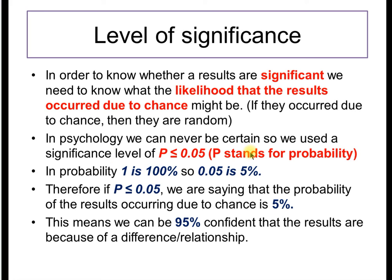P stands for probability. In probability theory, we express something like 5% as 0.05, with 1 being 100%. Therefore, if our probability is 0.05, we're saying that there is a 5% chance our results could have occurred randomly. This means that there is a 95% confidence level that our results were the consequence of whatever we did, or that they do share a relationship or difference.